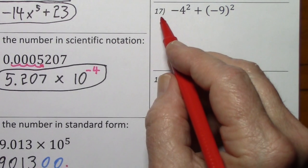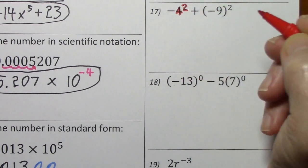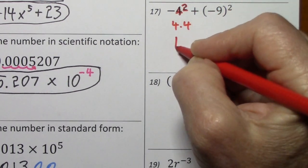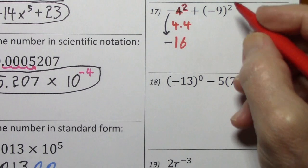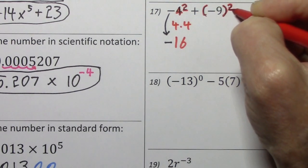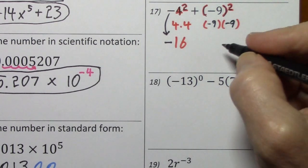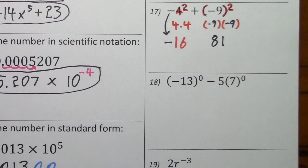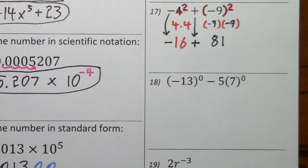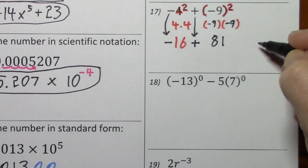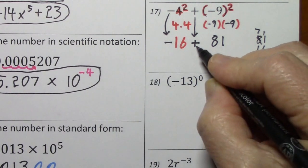Looking at 17: we'll have to take care of these exponents — the exponent applies to what it touches and nothing more. Over here the exponent is touching the parentheses. This plus drops straight down. So now the signs are different: you subtract smaller from the larger and keep the sign of the larger.